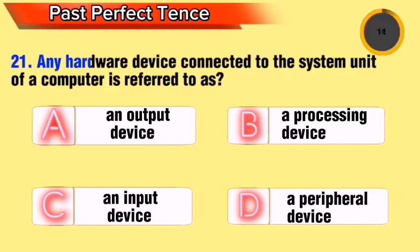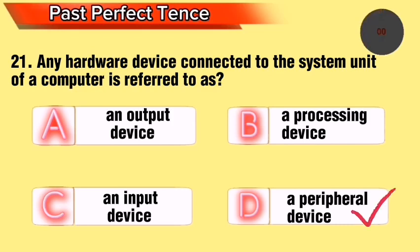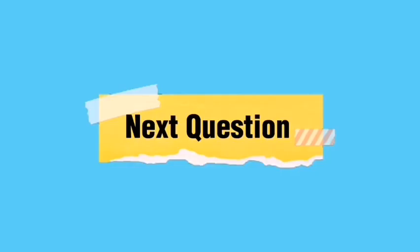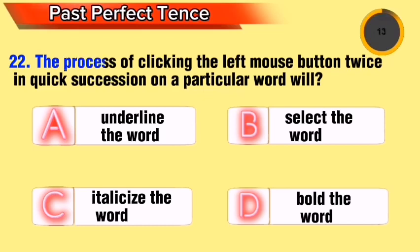Question 12: Any hardware device connected to the system unit of a computer is referred to as what? Question 13: The process of clicking the left mouse button twice in quick succession on a particular word will do what?